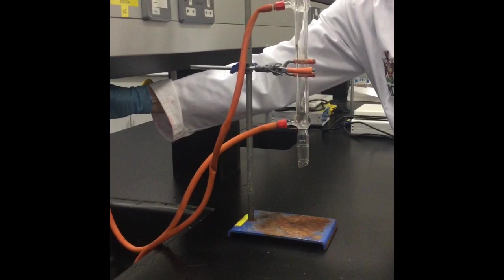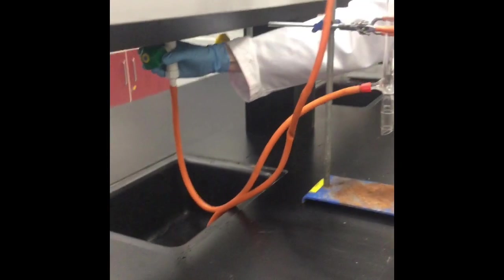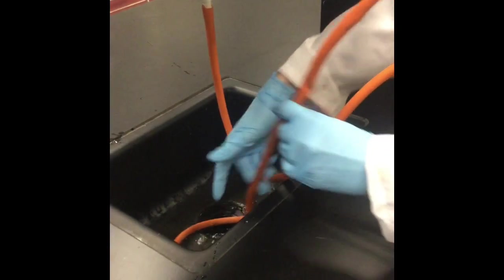Turn the tap on gently and make sure there is a constant flow of water going through the tubing through the condenser and back into the sink.